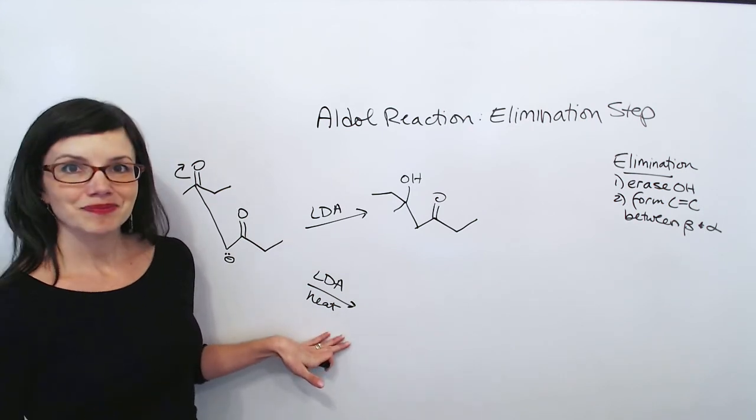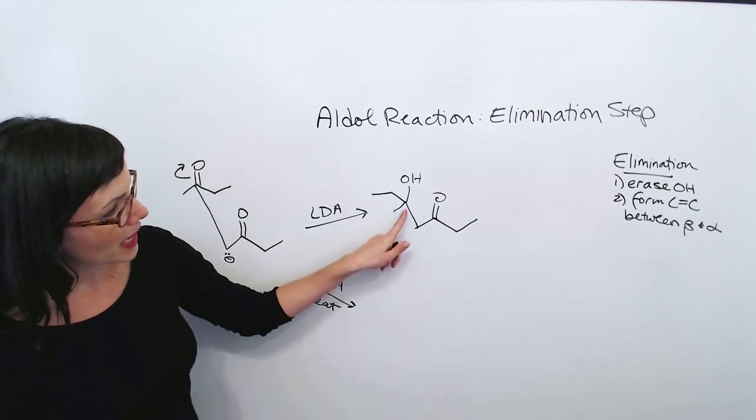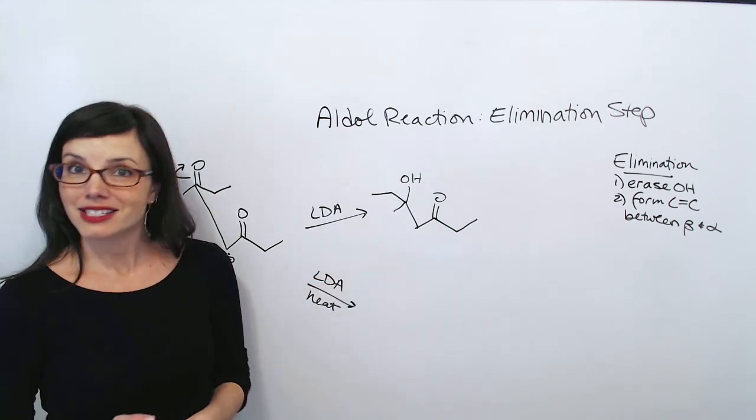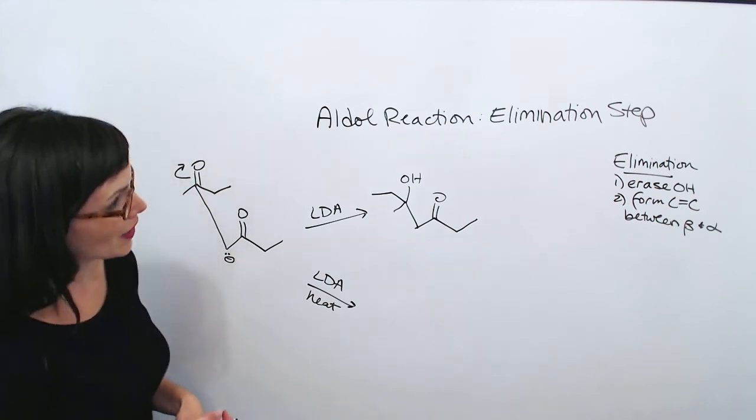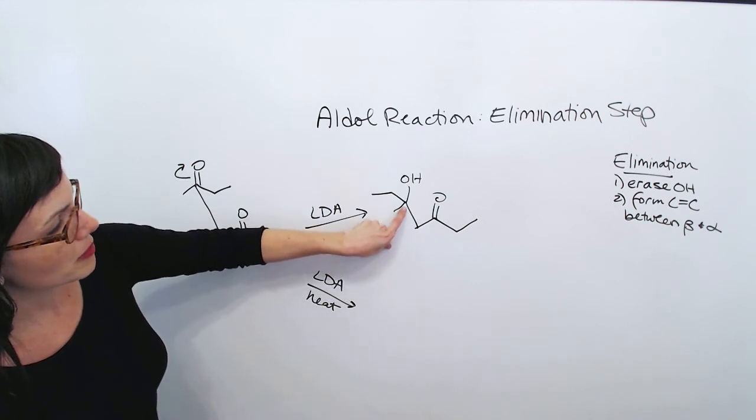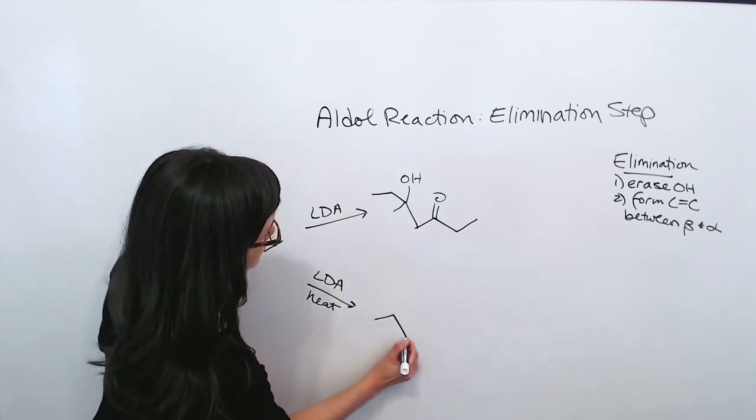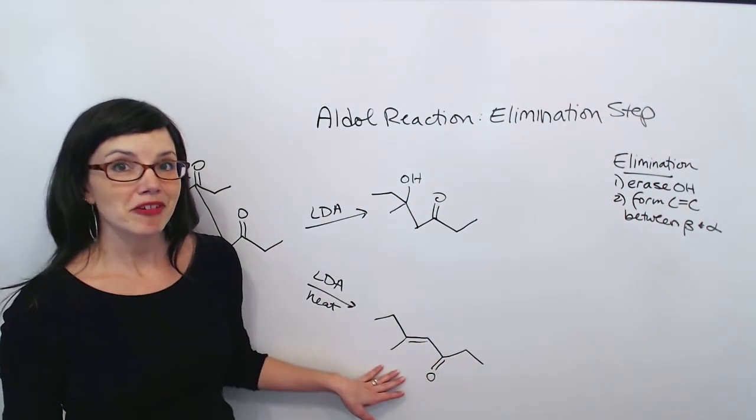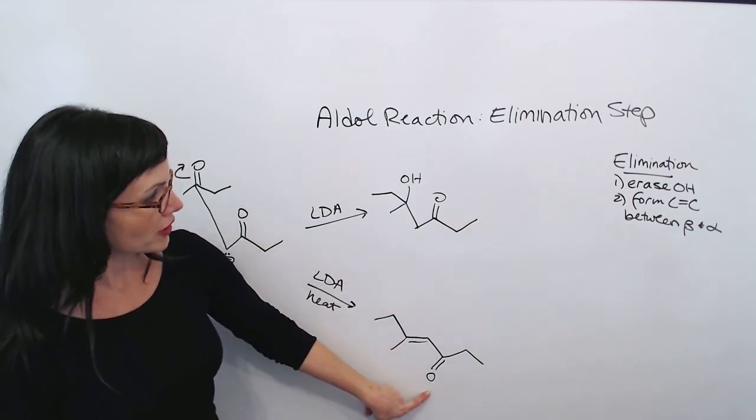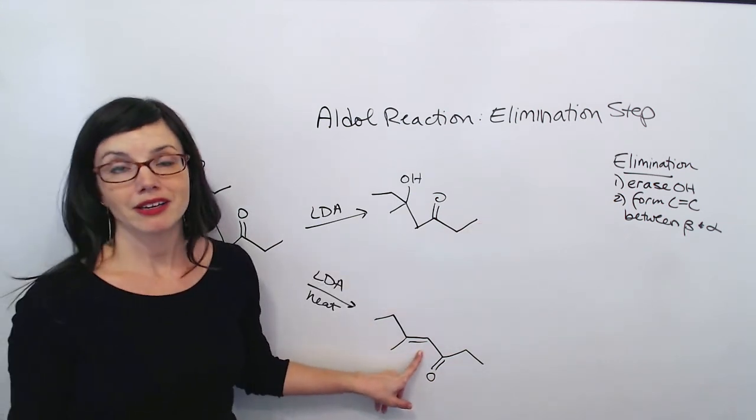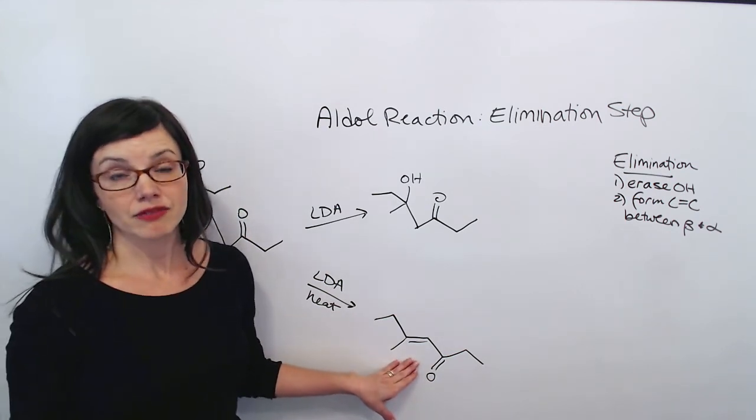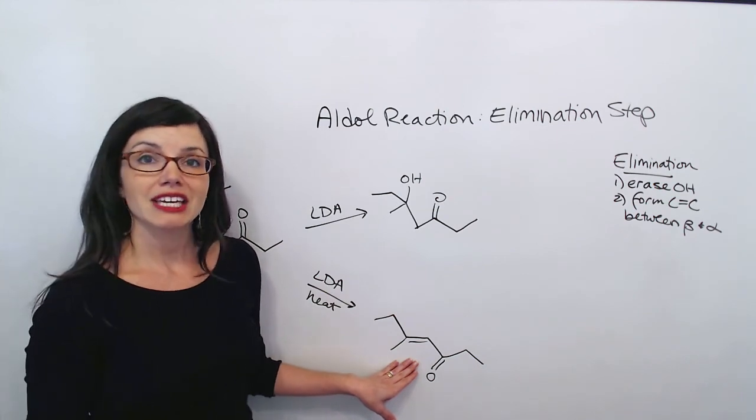Now, if this were done in heat, I wouldn't have this beta-hydroxy ketone. I would instead have an alpha-beta unsaturated ketone. So all I need to do to draw that is instead erase this OH and draw my double bond between the beta and the alpha. This is my alpha-beta unsaturated product. You'll notice I have seven carbons in my main chain, my ketone on carbon 3, and my double bond between the alpha and beta carbon. And you'll notice here that I have the E version of the molecule. There will be a mixture of E and Z.